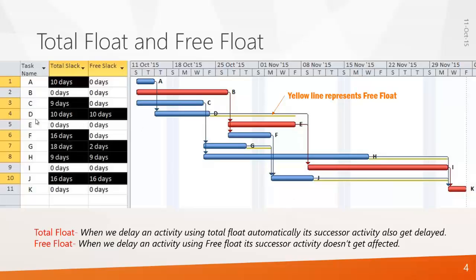Now look at activity D where free float is 10 days. If you delay activity D it won't affect its successor till a certain time. Similarly, look at activity G — you can delay activity G for 2 days without affecting its successor J. So that's free float: when you use free float, its successor activity does not get affected.